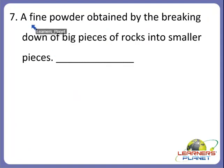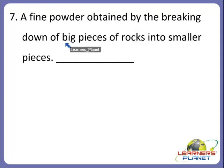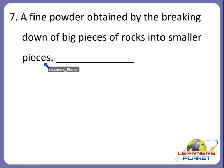Now the next one: a fine powder obtained by the breaking down of big pieces of rocks into smaller and smaller pieces — what is it called? When big pieces of rocks break down into smaller and smaller pieces because of wind and water, we get a very fine powder. Yes, it is called sand.